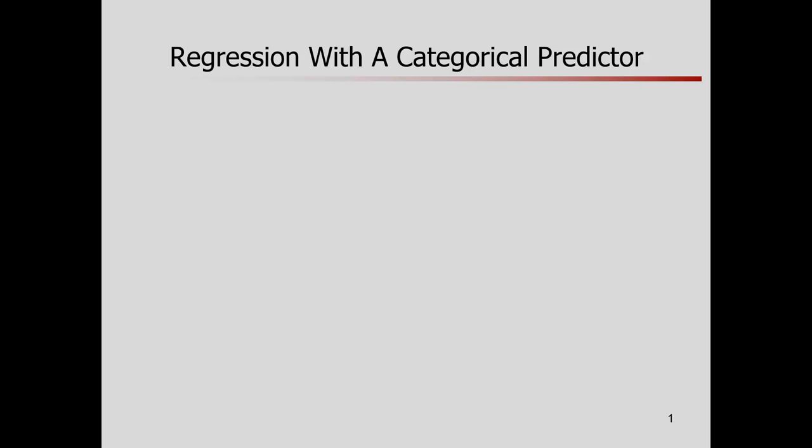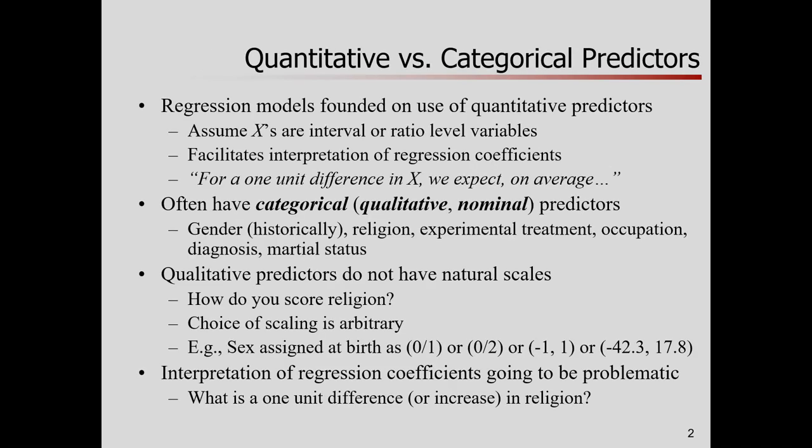We'll talk about regression where our predictor variable is categorical. Let's think about this distinction of categorical versus continuous or quantitative. The foundation of regression models was built on the idea that our predictors, our x's, are quantitative. If you're a measurement person, you might think of them as having interval or ratio levels. It facilitates interpretation of regression coefficients for a one-unit difference in age or something like that.